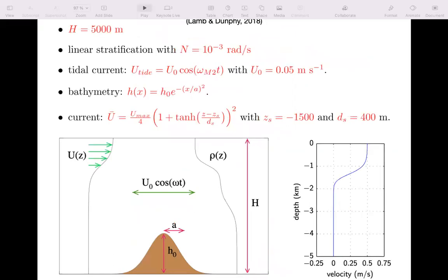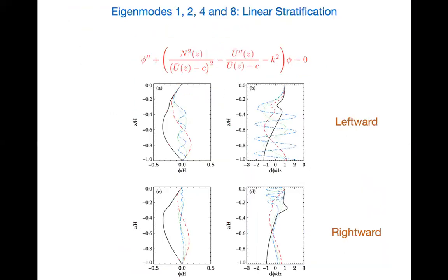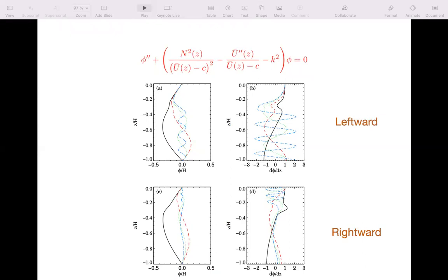Now I'll show a few results — all dimensional. Water depth 5000 meters; in this set the density field is linear (rho is a linear function of z). A Gaussian topography, M2 tidal frequency with a tidal current of 5 centimeters per second. Calculating the vertical eigenmodes — the discrete spectrum for leftward and rightward propagating waves — they have very different properties. For the leftward-propagating waves, the eigenmodes have oscillations near the bottom, whereas for the rightward-propagating waves, the oscillations are in the upper part, within the current.